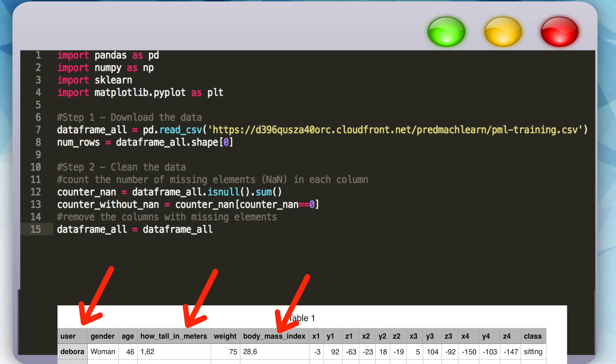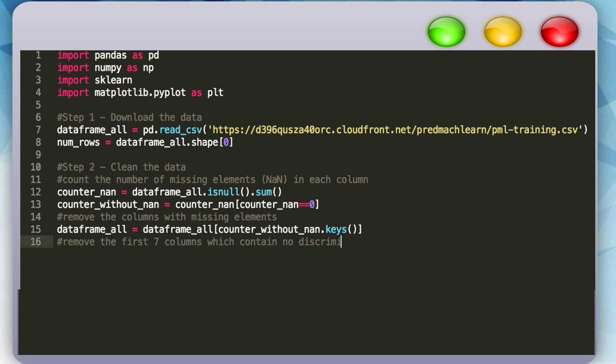Also, if we look at our data, the first seven columns don't have information we can use to differentiate between our classes. So let's remove them as well using the IX function, which asks for the index of columns we want to delete. We'll specify from the start up to column seven.